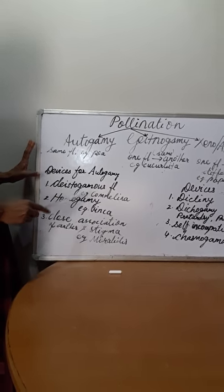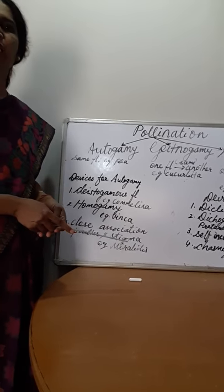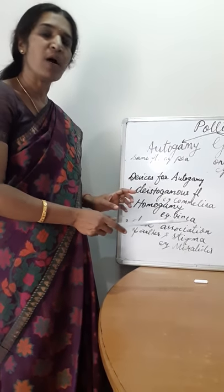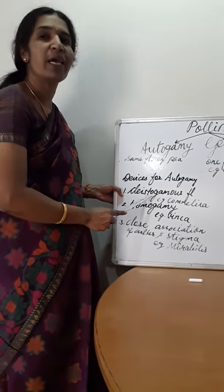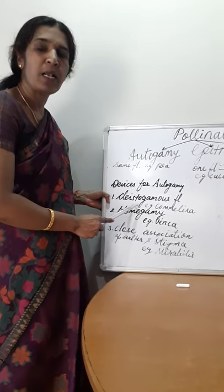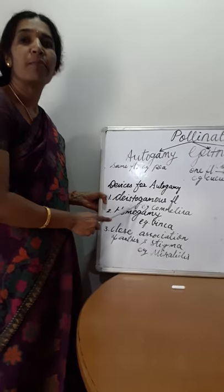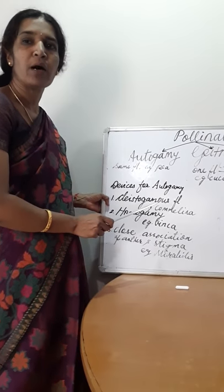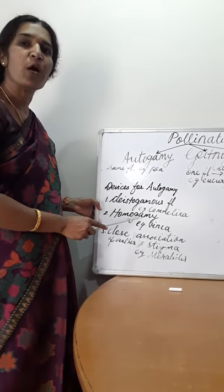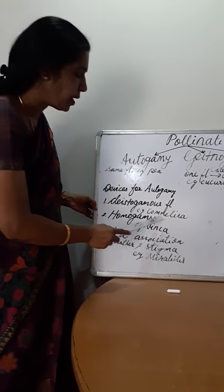Number one is the kleistogamous flower. What is the meaning of kleistogamous flower? The flowers do not open at all. This is a question always asked in board exams: What is a kleistogamous flower, give an example, and what are its advantages? The answer is: kleistogamous flowers do not open at all. They ensure assured seed set, and pollination is assured. That is the advantage of kleistogamous flowers. Example: Commelina.